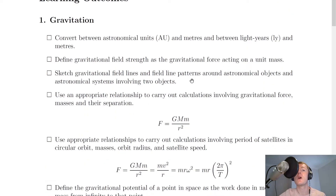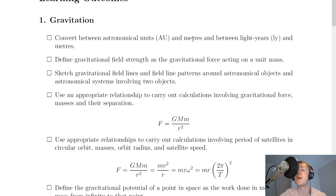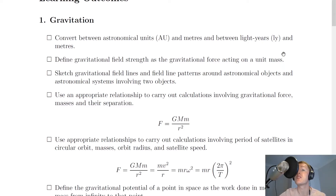In section one, gravitation, you need to be able to convert between astronomical units and metres and between light years and metres. To go from AU to metres, you times by 1.5 times 10 to the 11, and to go from metres back to AU, you divide by 1.5 times 10 to the 11. To go from light years to metres, you times by 9.46 times 10 to the 15, and to go from metres back to light years, you divide by 9.46 times 10 to the 15.